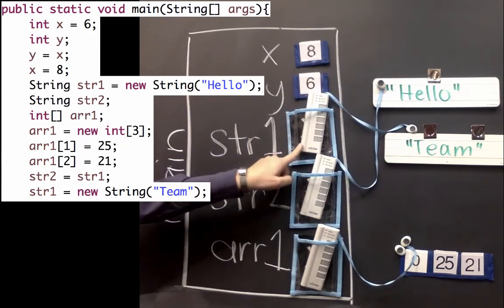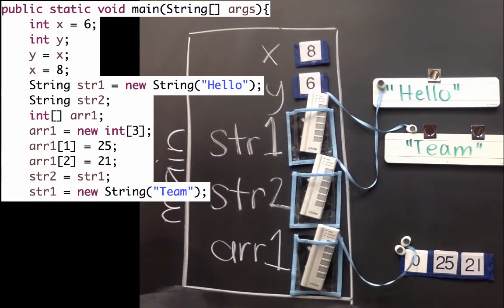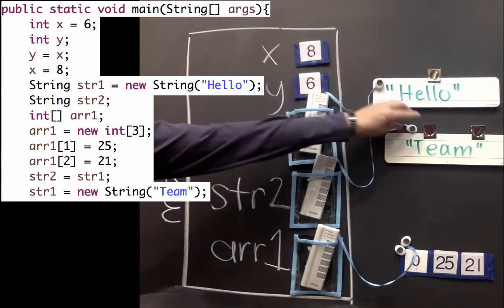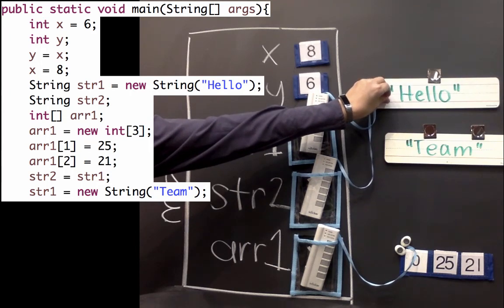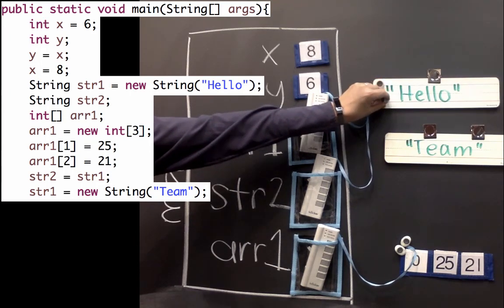It still points to hello, and str1 points to team. I'll mention here that strings are actually a little bit weird. So you actually can't change them. So there's no methods that we can call in a string that changes them. So even in the case where these both reference the same string, neither one of them could actually change it. So it didn't matter that they were referencing the same string.